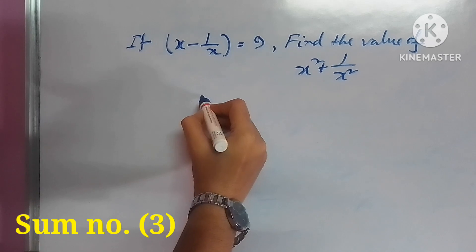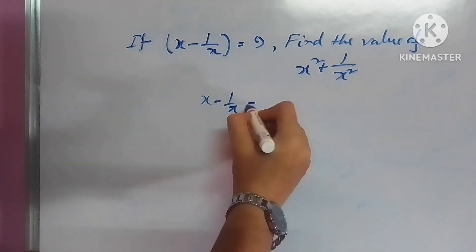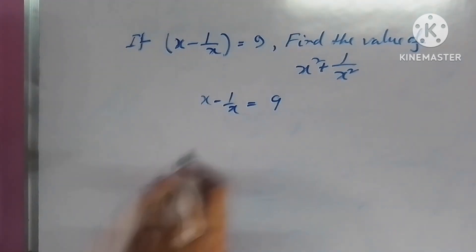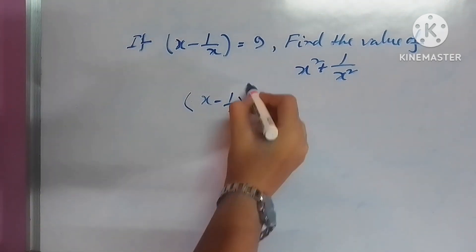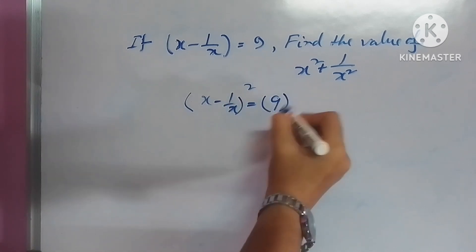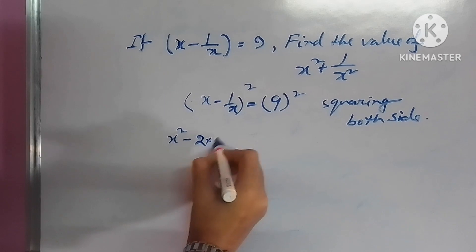In my third example, x - 1/x = 9. The value is given. We have to find out the value of x² + 1/x². So to get the desired value, I am just squaring both sides of this given value.